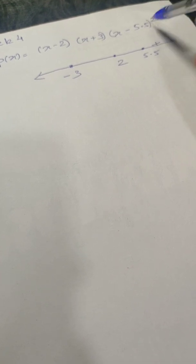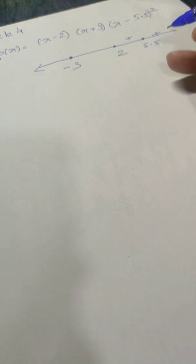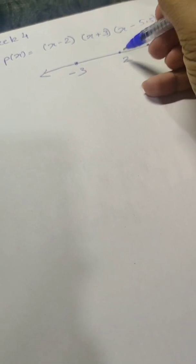3 minus 2 is 1, 3 plus 3 is 6, and 3 minus 5.5 will be something negative, but since we have a square here it will come as positive. So again we get here as positive, the values between 2 and 5.5.